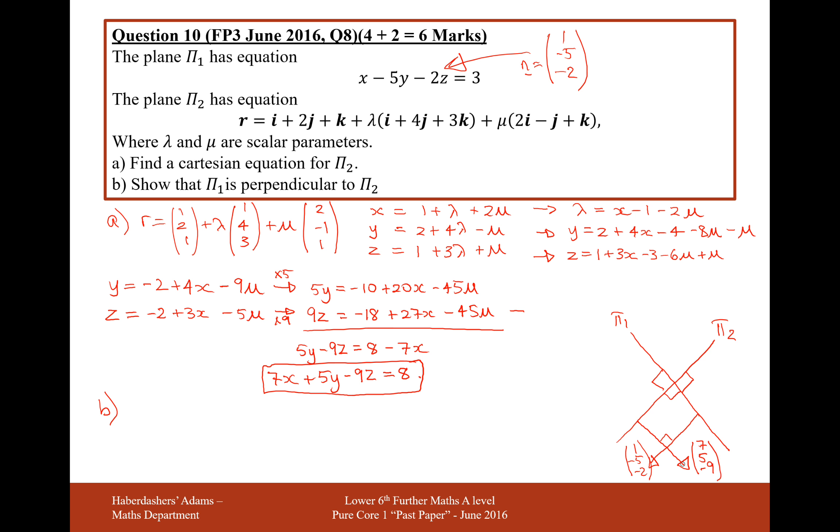So what we need to do to show that these two vectors are perpendicular, their dot product must equal 0. So 1, minus 5, minus 2 dotted with 7, 5, minus 9 equals, fingers crossed, 7 minus 25 add 18. And okay, we do get 0. Perfect.